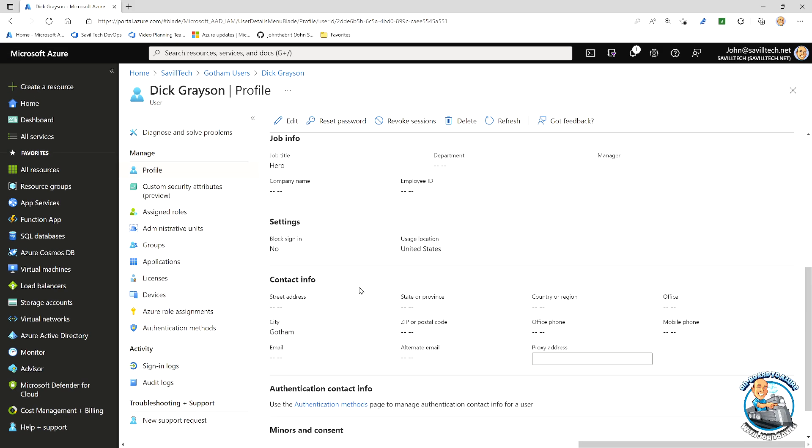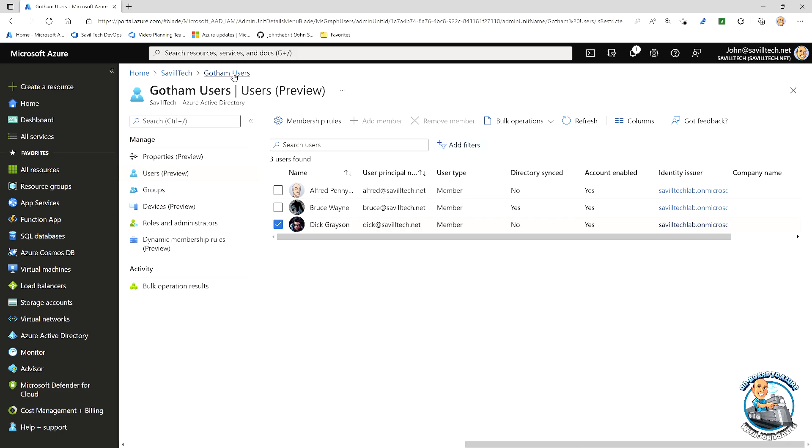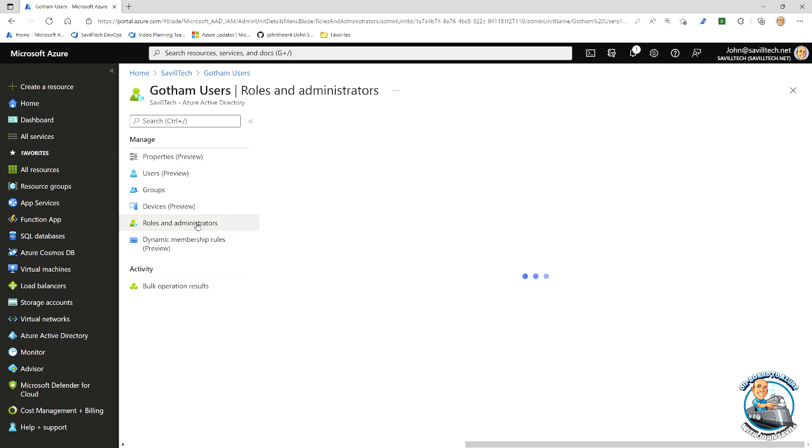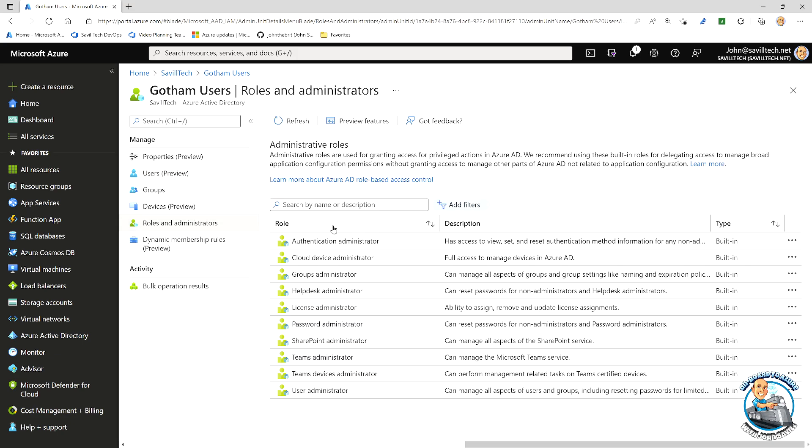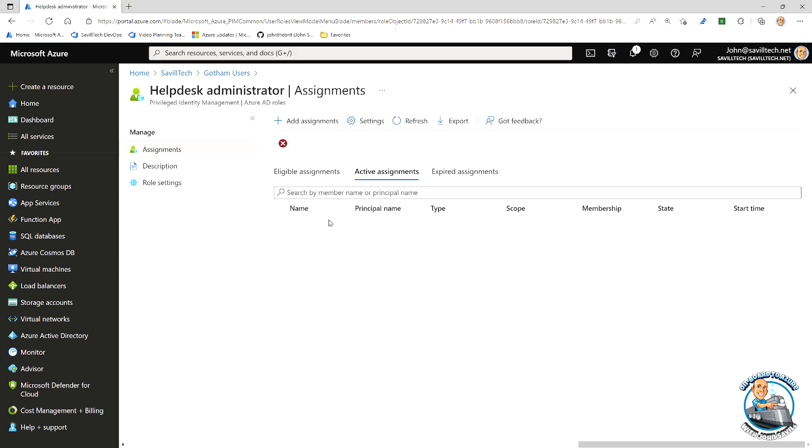But realize I could have done many different types of attributes, many different things to actually drive this. So now I have this administrative unit that as users have their city set to Gotham or they leave Gotham, they'll be added and removed from this administrative unit. And then I can grant roles at this scope, at the administrative unit, instead of all of Azure AD. And what I did is I gave Alfred the help desk administrator role, just on this administrative unit.